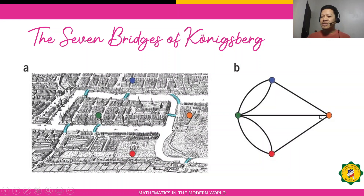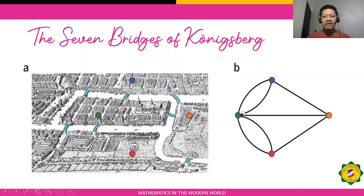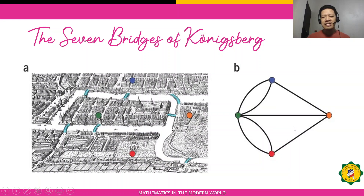For the orange vertex, the degree is also three. The degree of the red vertex is also three. For the green vertex: one, two, three, four, five — so the degree is five. As you can see, all the degrees of all vertices are odd.